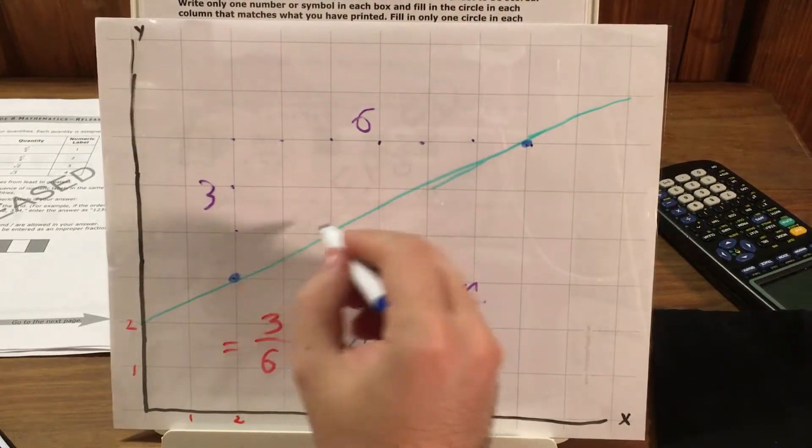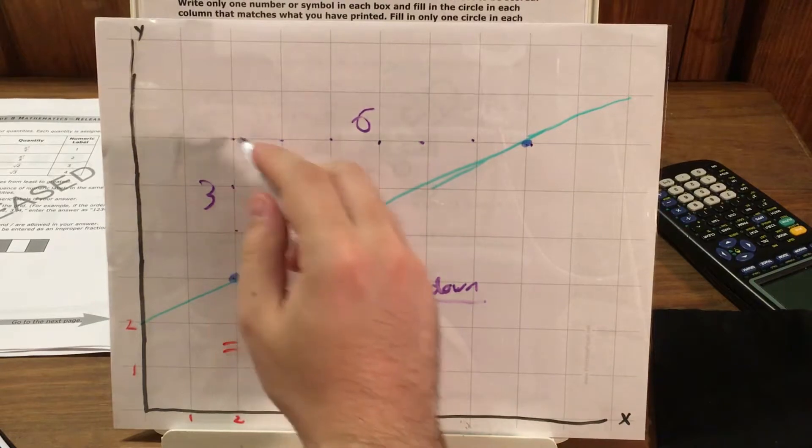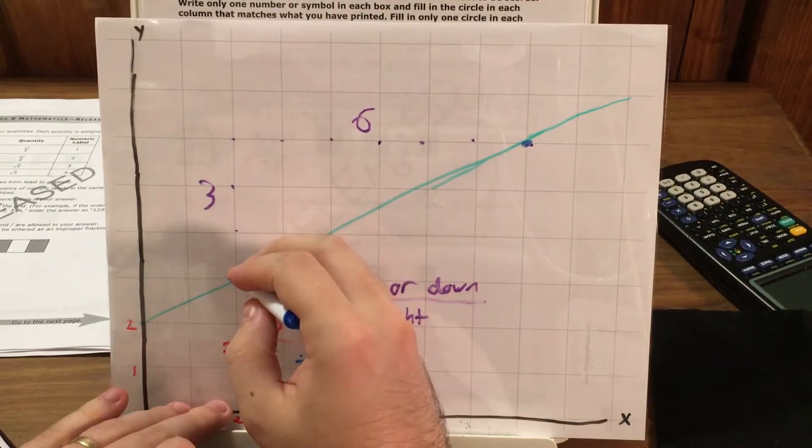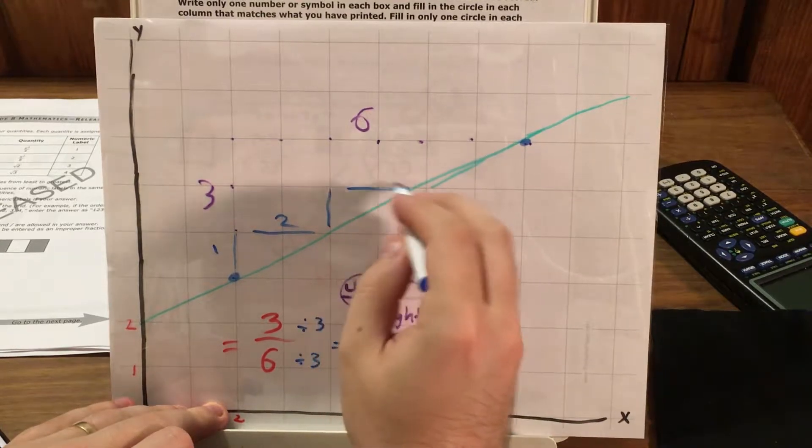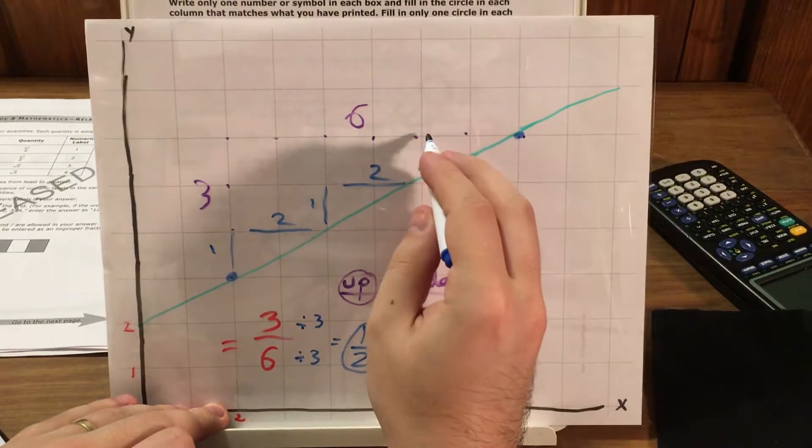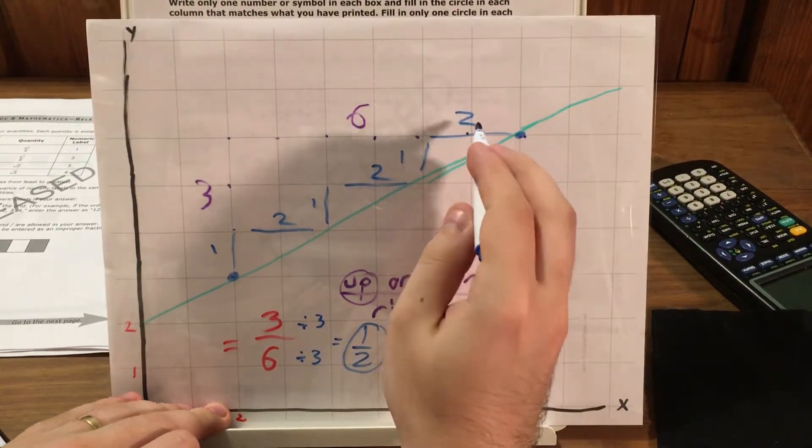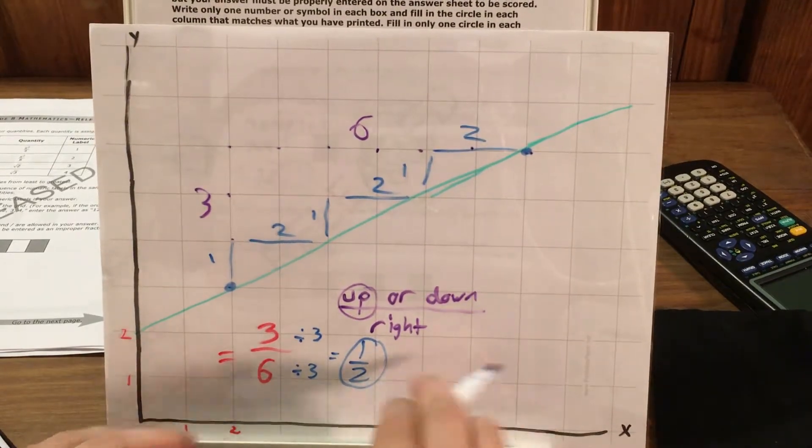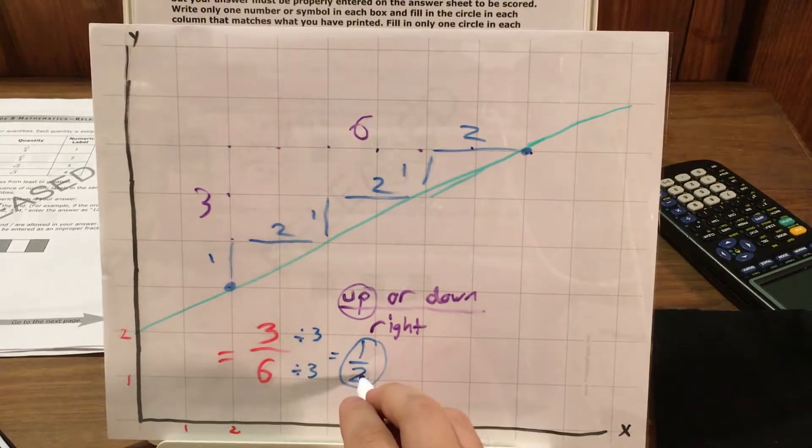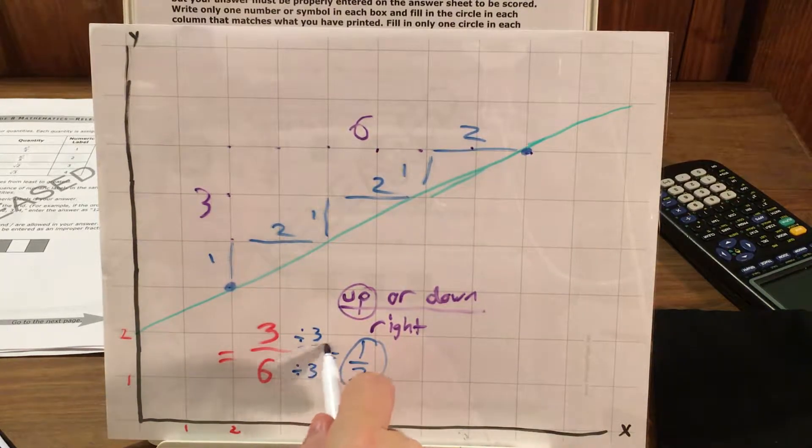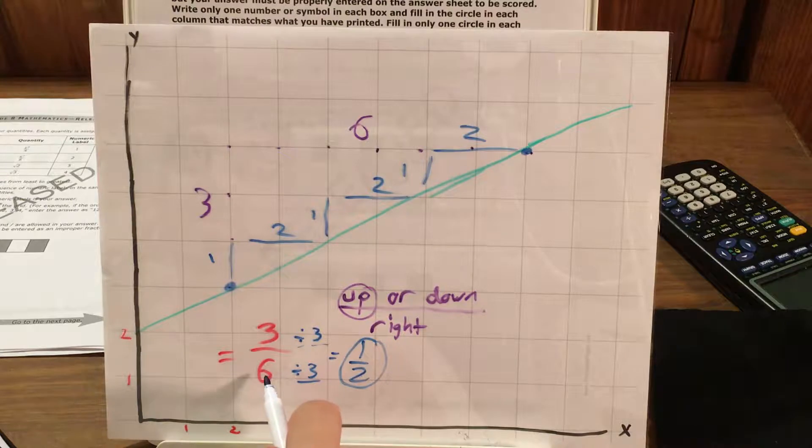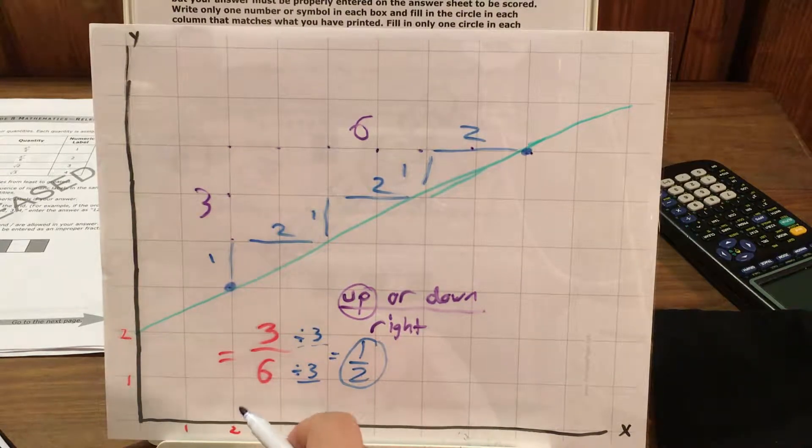Now if you look on this graph, you can see that we can go 3 up and 6 right easily. But I can also go 1 up and 2 right, 1 up, 2 right, and 1 up, 2 right. And we can see this 1 up and 2 right pattern in the simplified fraction. And we just did it 3 times, which makes sense because 3 is what I divided my numerator and denominator by in this slope fraction.